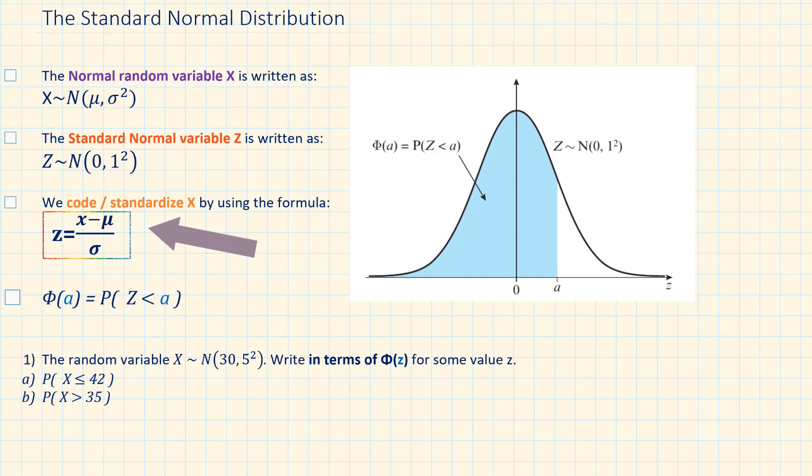The formula that we are using to code or standardize X is z = (x - μ)/σ. Φ(a) is equal to the probability of Z being less than a, as you can see shaded in blue.